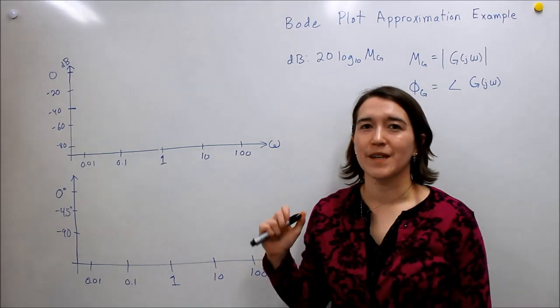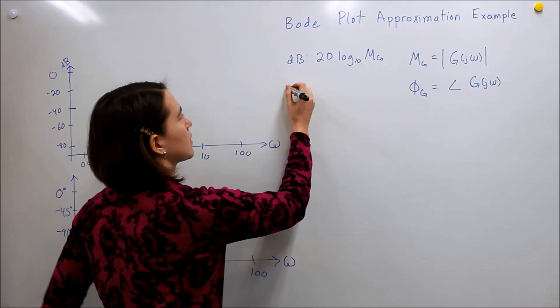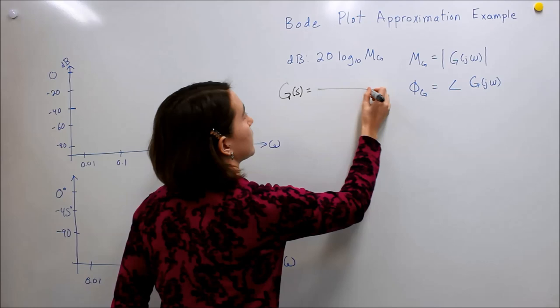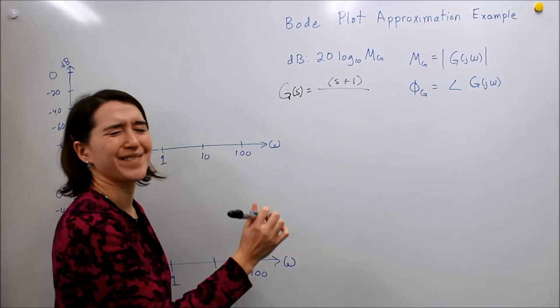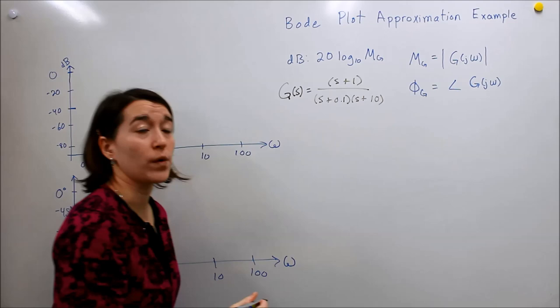We're going to work one more problem using the Bode plot approximation for the frequency response. We're going to look at a system that has one zero and two poles. We have a zero at negative one, and then we have s plus 0.1 and s plus 10, so we have two poles.